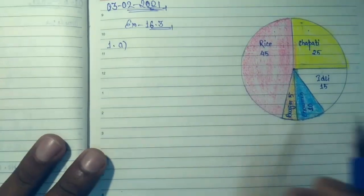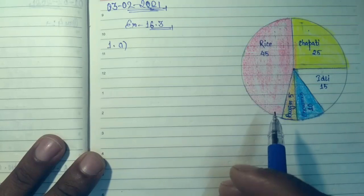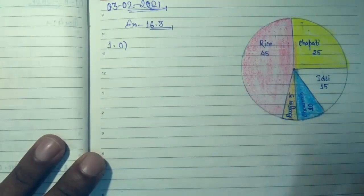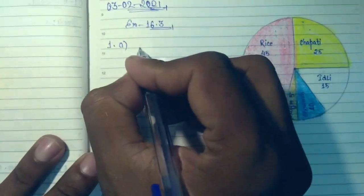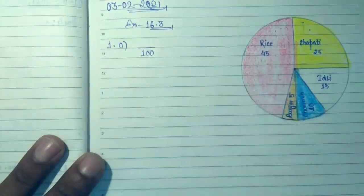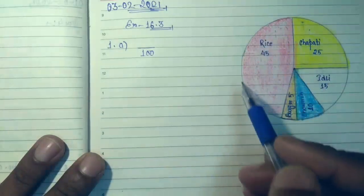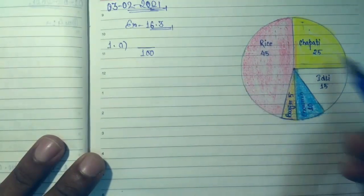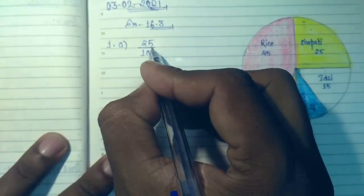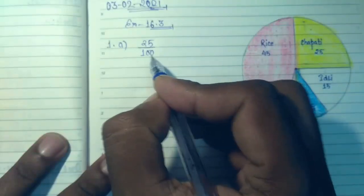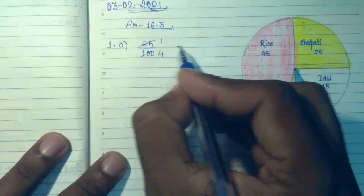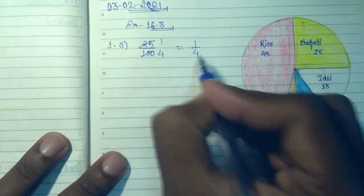Question (a): What fraction of the total children like chapati? The total children were 100, so the denominator would be 100. Out of 100, how many like chapati? Chapati is 25. So we divide 25 by 100, or simply cut: 25 ones are 25, 25 fours are 100. So the fraction is 1 by 4.